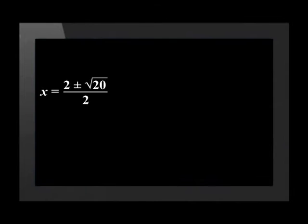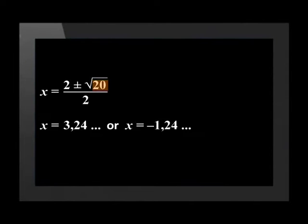If the number underneath the square root is not a perfect square, such as the example x equals 2 plus or minus the square root of 20, all over 2, then the solution to the equation will still be real, but it would be irrational. Thus the nature of the roots will be real and irrational — real because they exist, and irrational because the decimals go on forever with no recurring pattern.